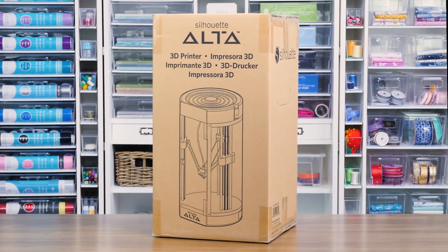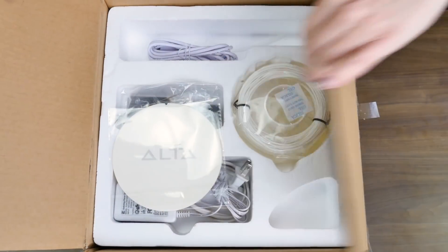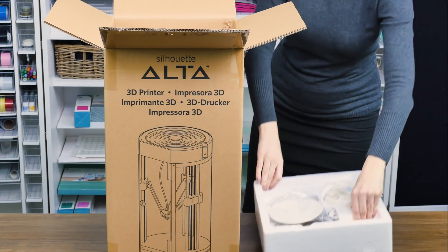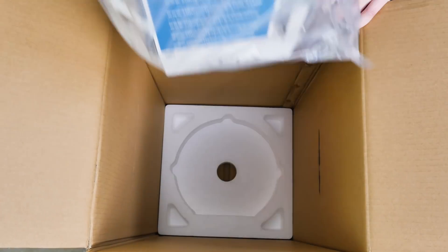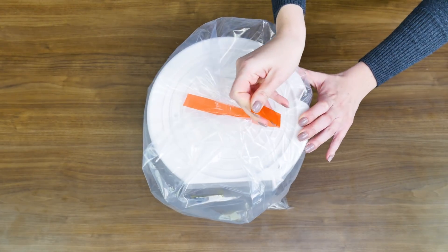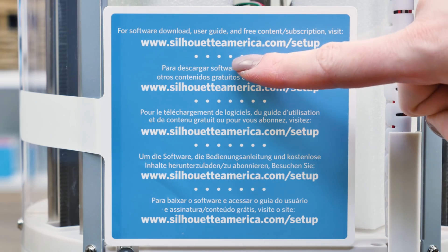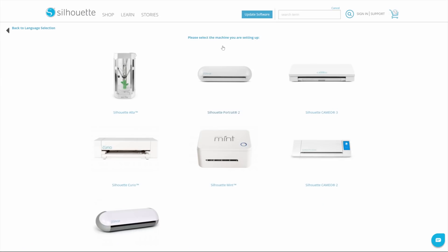Register your machine. Start by taking your machine out of the box. Once the Alta is out of the box, you may register your machine at SilhouetteAmerica.com/setup. Completing the registration process will also sign you up for your official Silhouette account.